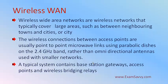Wireless WAN — wide area network. Wireless WANs are wireless networks that typically cover a large area compared to PAN, LAN, and MAN. They cover large areas such as between neighboring towns and cities — connecting town to town and city to city. If you need to connect towns or cities over long distances, we go for a wireless wide area network. These connections are available between access points, usually via point-to-point microwave links using parabolic dishes at a frequency of 2.4 GHz.